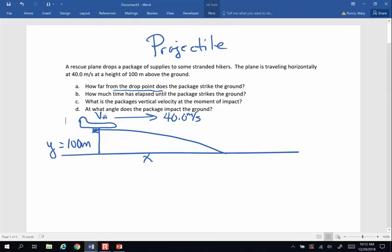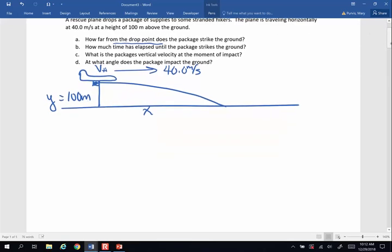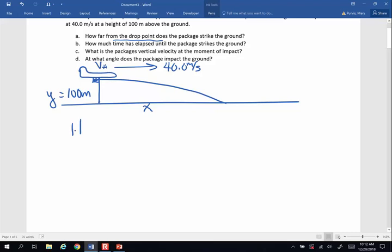So when you're dealing with a projectile, what you do is you have two columns of data, your horizontal information and your vertical information. On the horizontal side, I know the horizontal velocity of the package is 40 meters per second. I am looking for X. I do not know how much time is in the air.